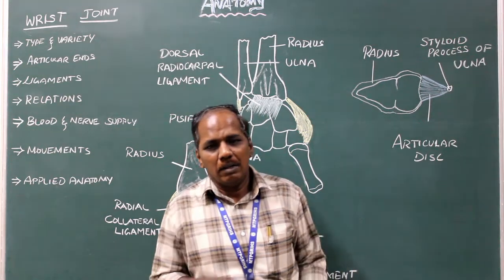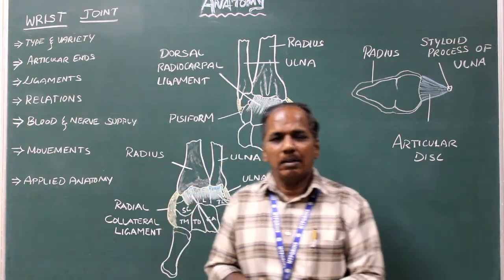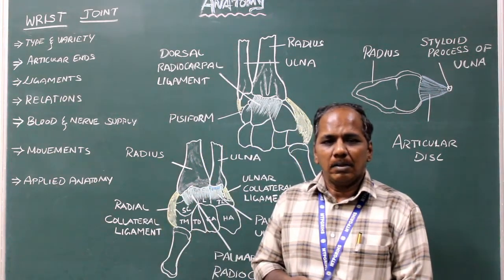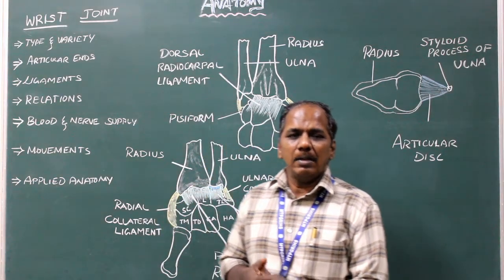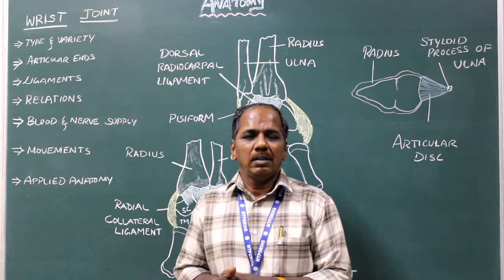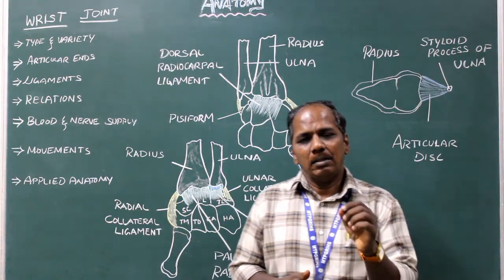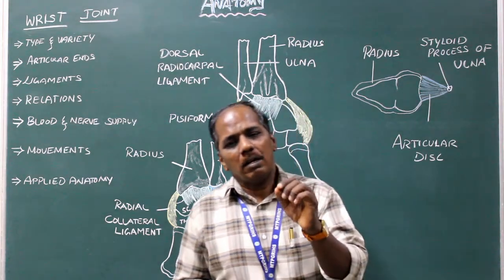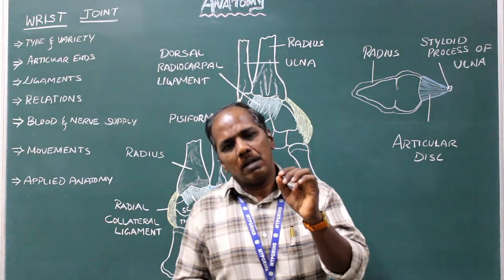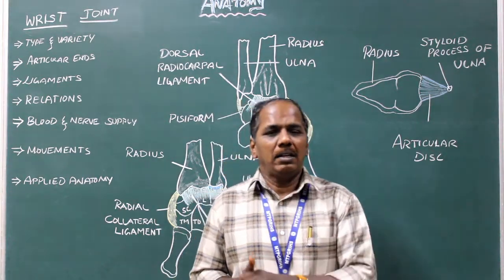Wrist joint. Type: synovial variety, condyloid or ellipsoid variety.